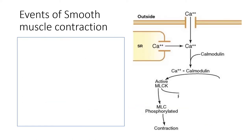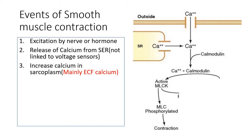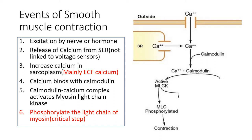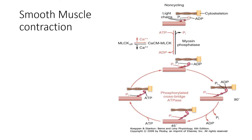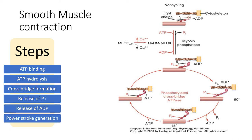The events of smooth muscle contraction begin with excitation by a nerve or hormone, triggering an action potential and causing influx of calcium from extracellular sources into the muscle interior, as well as release of calcium from the sarcoplasmic reticulum. This calcium binds to calmodulin, activating myosin light chain kinase, which phosphorylates the light chain of myosin — a crucial step without which contraction will not occur. Contraction then follows: ATP binding, ATP hydrolysis, retention of products in the myosin head, cross-bridge formation, release of ADP and phosphate, and power stroke generation.